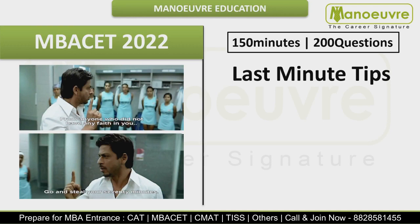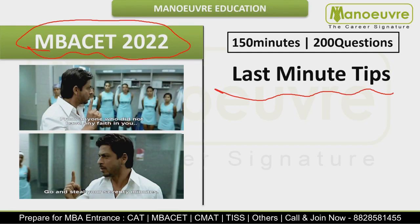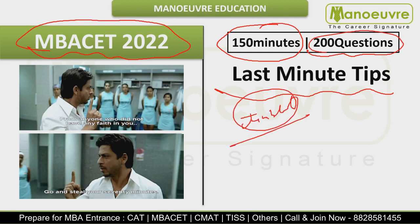Hi guys, welcome to last minute tips video for Maharashtra MBA CET 2022 examination. Overall 150 minutes time we will get to solve 200 questions, and this year paper will be jumbled. This is very clear that paper will be in jumbled format — it will not be in sectional format.